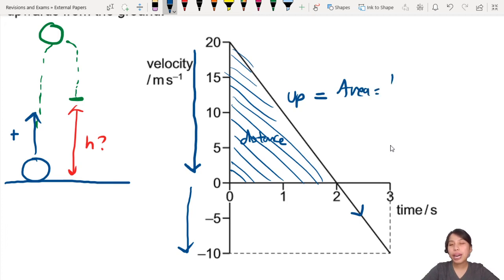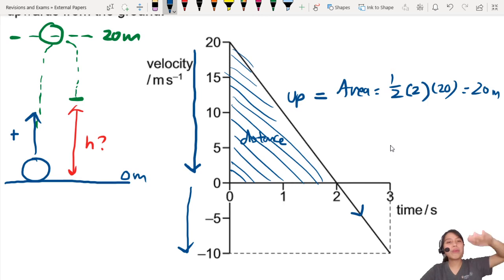which will be half two seconds, half base times height. So half of 2 times 20, that will be 20 meters. Okay. So that means in the first part, the ball will go up by 20 meters. So up here is 20 meters. Let's say down here is zero meters. So the ball goes up 20 meters.